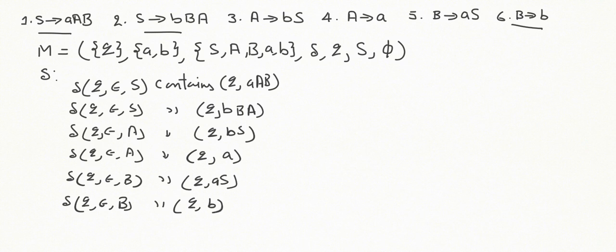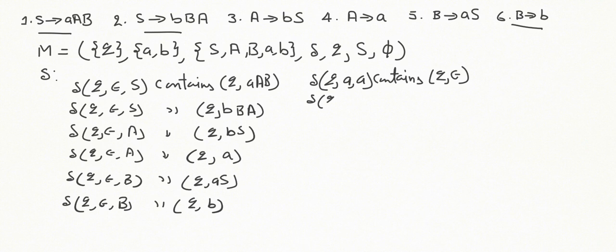Next, for each terminal symbol a belonging to T, we include the following transitions: δ(q, a, a) contains (q, ε) and δ(q, b, b) contains (q, ε). In this way we have designed the PDA equivalent to the given CFG. Now the second part of the question asks to process the given string.